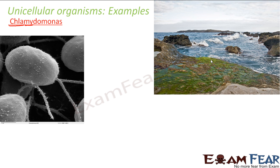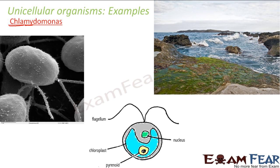Sometimes during the rainy season you have algae even on your walls or floors because of dampness. Chlamydomonas is a kind of green algae. The pictures shown here appear large, but actually they are all microscopic organisms — these pictures are the microscopic view of how they look when viewed through a microscope. Chlamydomonas is another example of a unicellular organism.